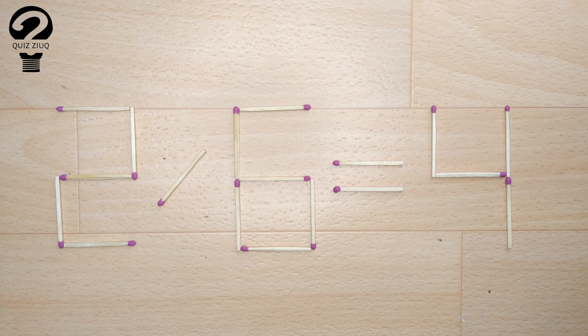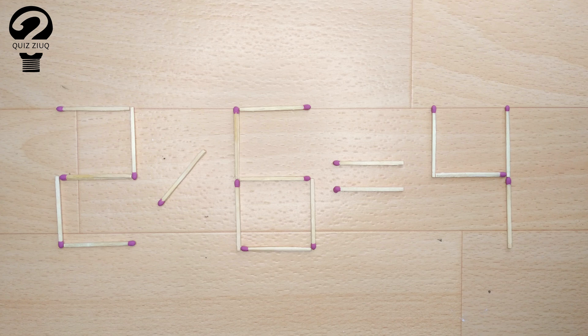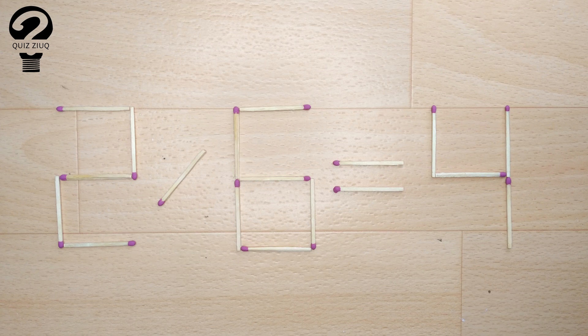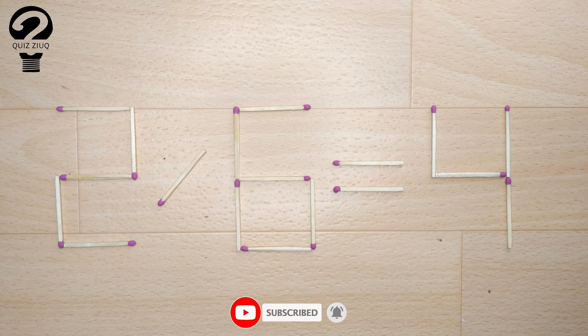This is a fairly simple mathematical problem that both children and adults can easily solve. Those who think logically can solve this problem. We need to move two matches to make our equation correct.